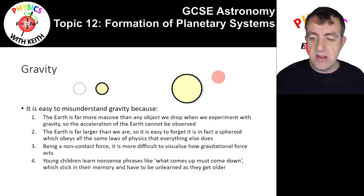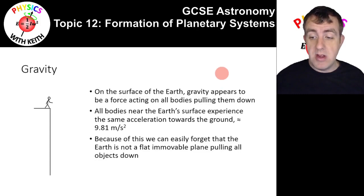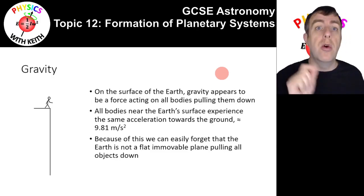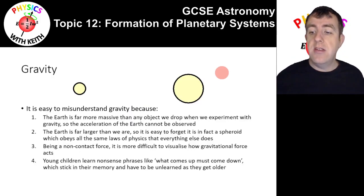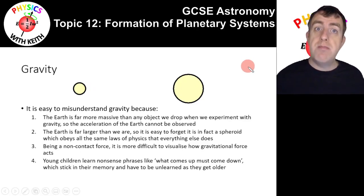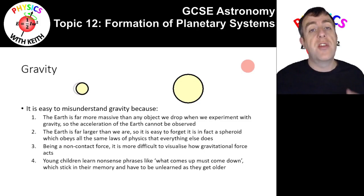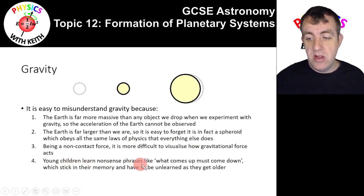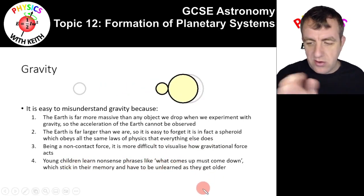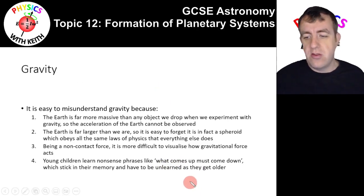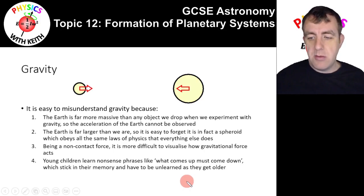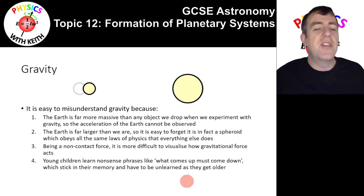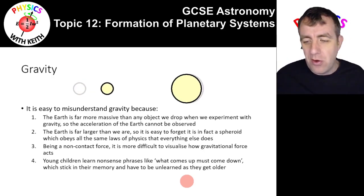To reconcile these two ideas — all bodies experiencing the same acceleration towards the Earth, yet different mass bodies accelerating differently towards each other — it's just a matter of committing this to memory. Remember that all bodies experience the same acceleration towards Earth, and that gravitational forces are always paired due to Newton's third law with equal magnitude forces in the opposite direction. Avoid misleading phrases like 'what goes up must come down' — it causes more misconceptions than it solves.